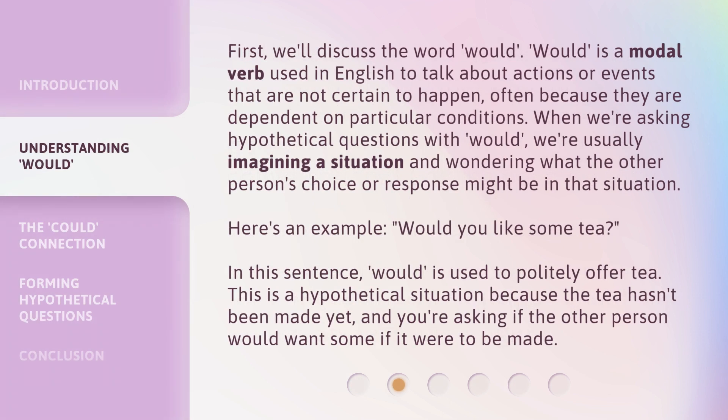First, we'll discuss the word would. Would is a modal verb used in English to talk about actions or events that are not certain to happen, often because they are dependent on particular conditions. When we're asking hypothetical questions with would, we're usually imagining a situation and wondering what the other person's choice or response might be in that situation. Here's an example.